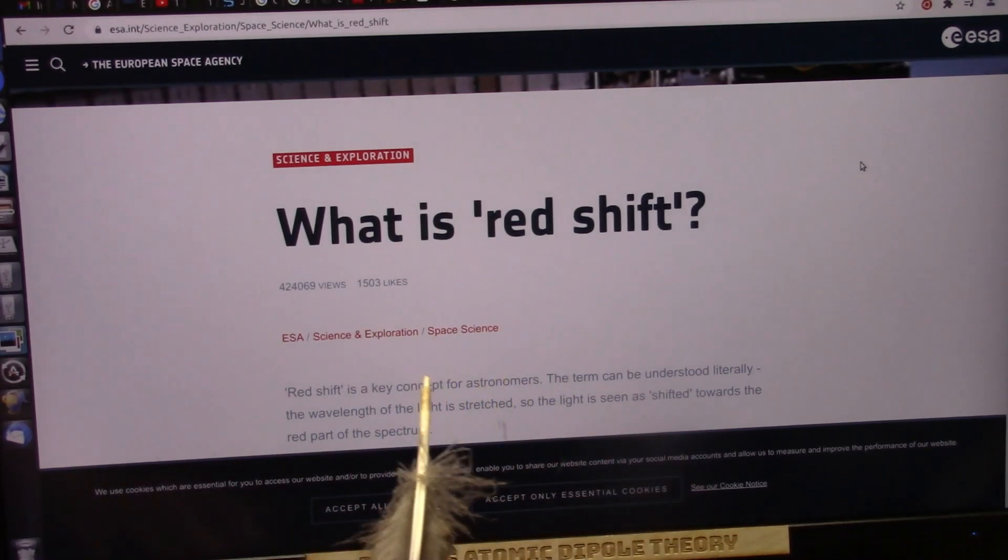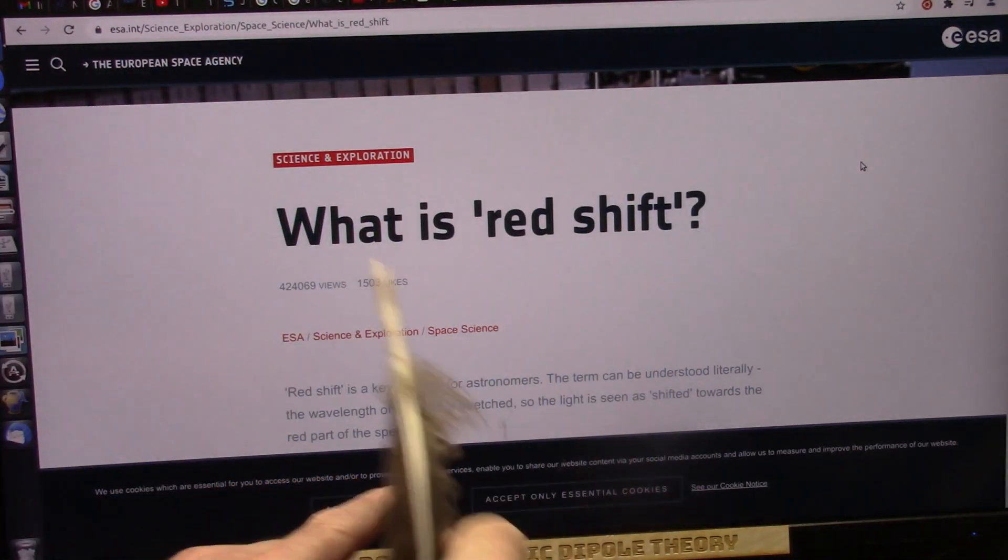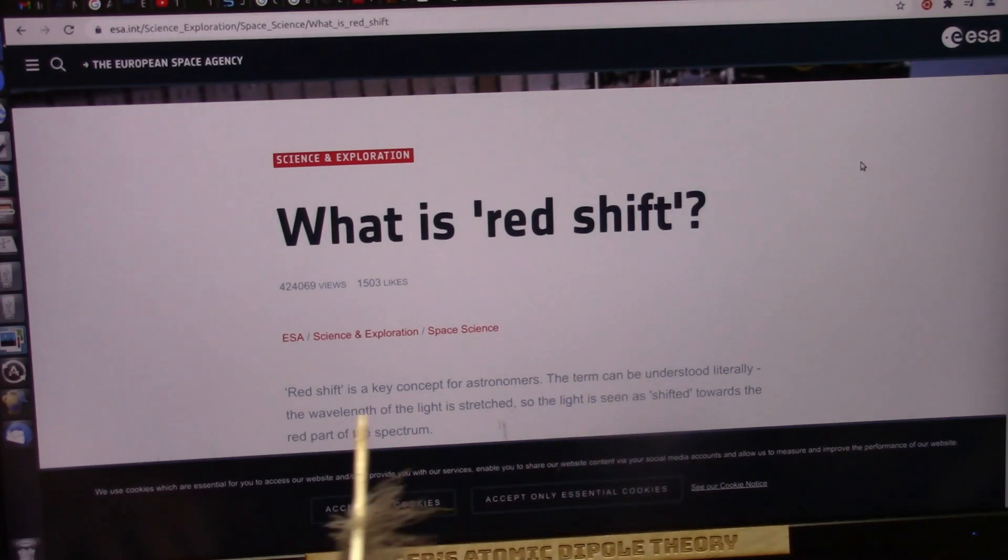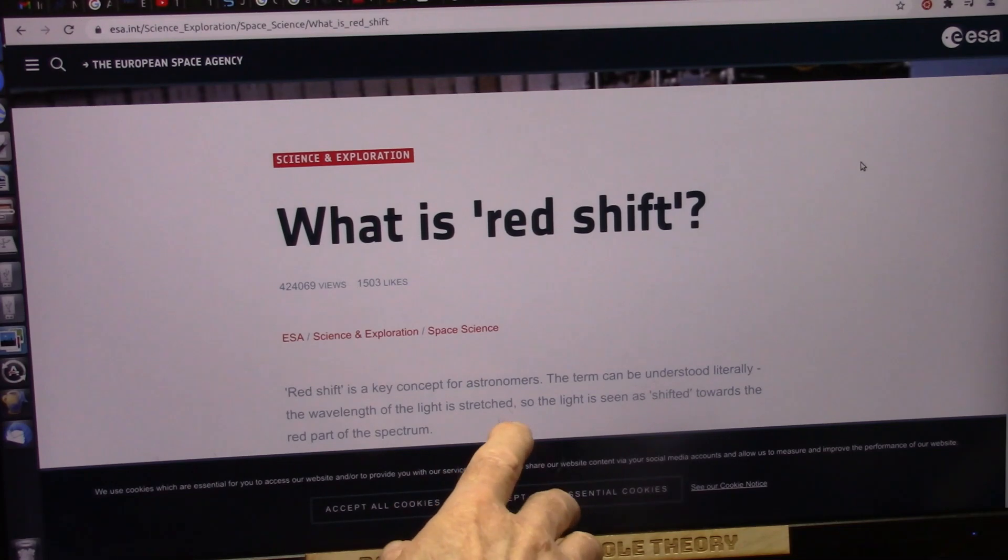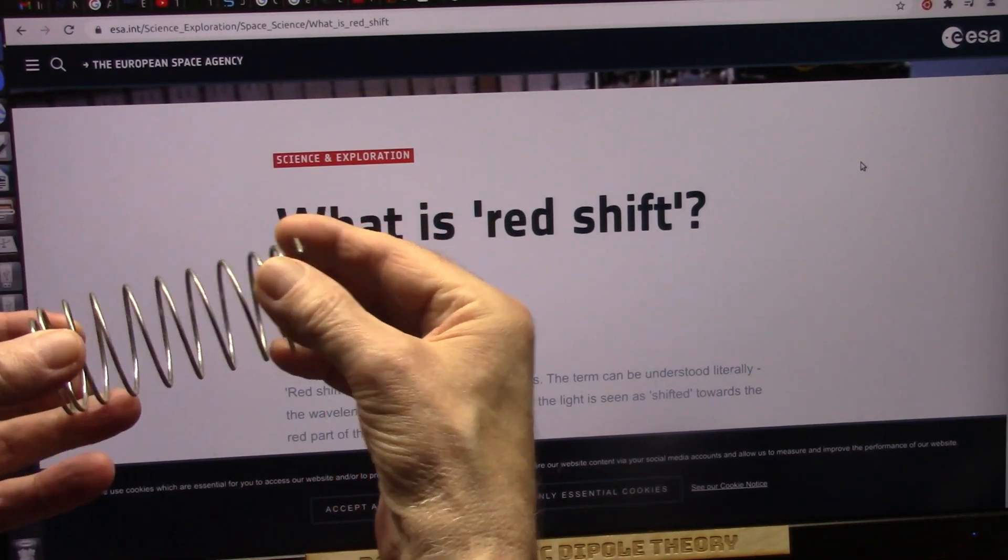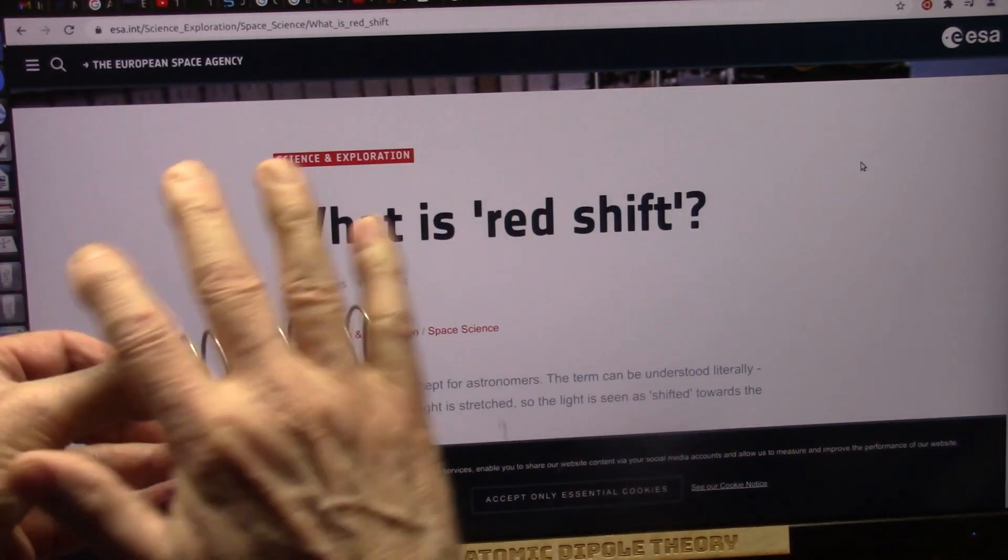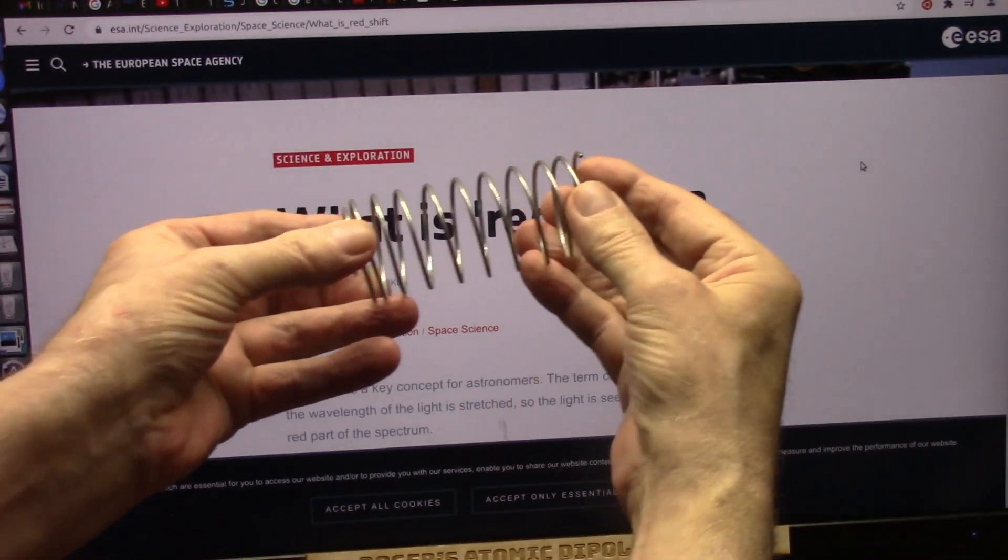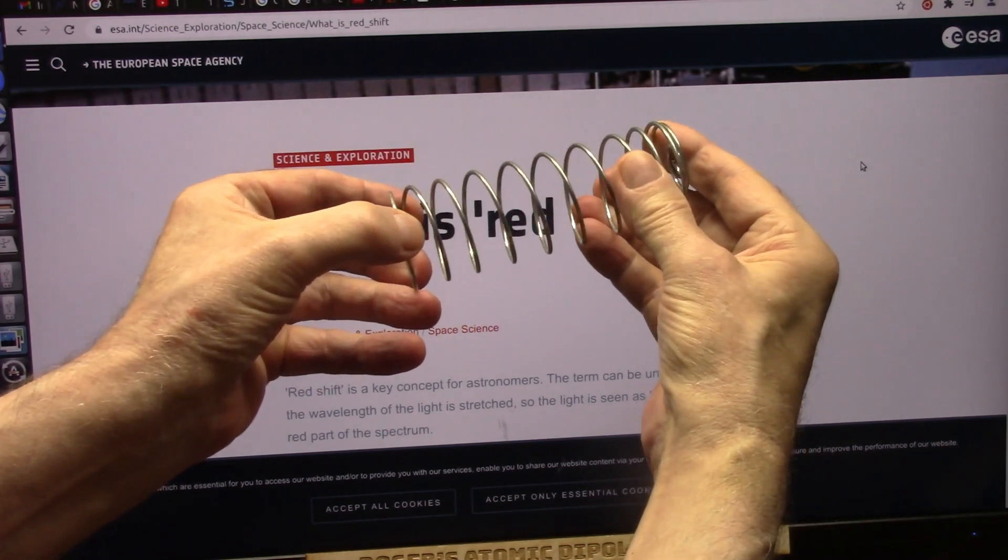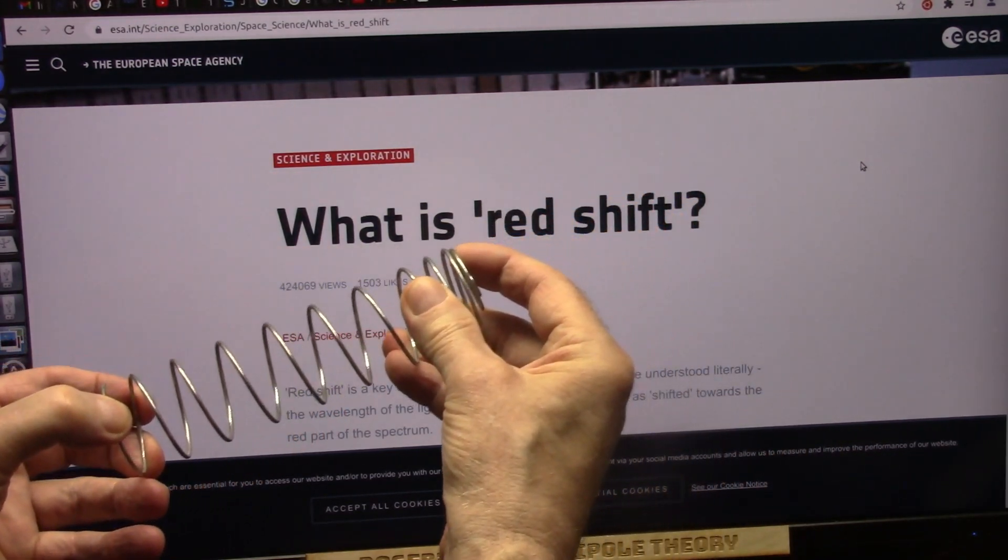This is a real delusional disaster. What is the redshift? The redshift is the key concept. This is the key thing for astrophysicists. The term can be understood literally. The wavelength of the light is stretched. So the light seems as shifted towards the red part of the spectrum. And they say there's planets out here pulling that light away, shifting it. That means everything is expanding out. No, it isn't.